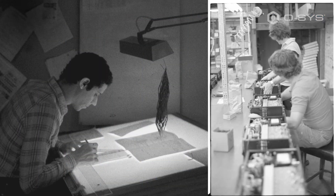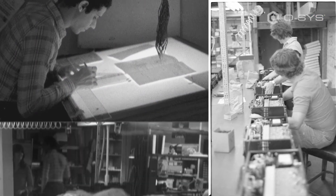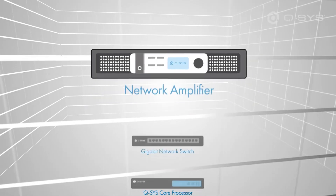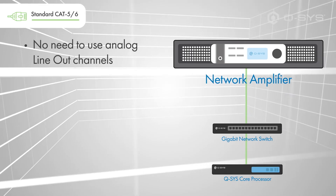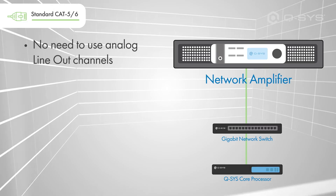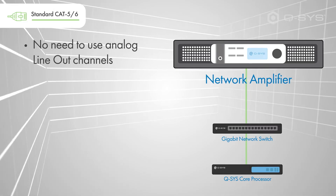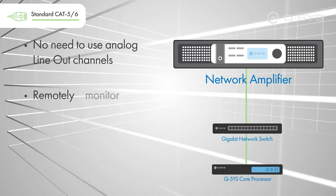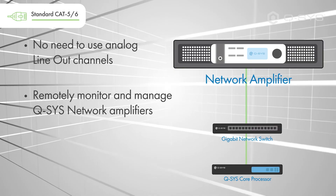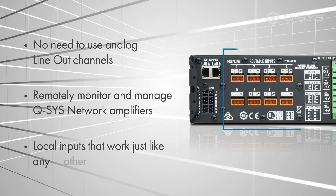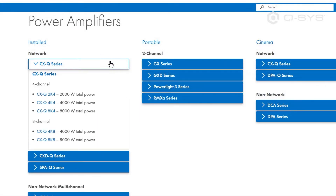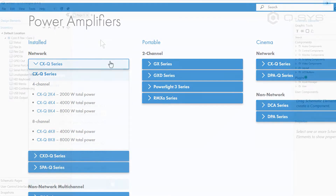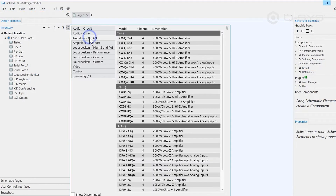Q-SYS has a long history in designing and building robust power amplifiers, and that extends to our native Q-SYS network amplifier models. Using Q-SYS network amplifiers means there's no need to use analog line out channels from Q-SYS or audio cables to deliver your audio channels to a non-network amplifier. Q-SYS network amplifiers can deliver advanced telemetry information for monitoring and management, and some models offer local inputs that work just like any other network input channel. You can browse models of network amplifiers on the Q-SYS website or by looking in the inventory and selecting Amplifiers Q-LAN.